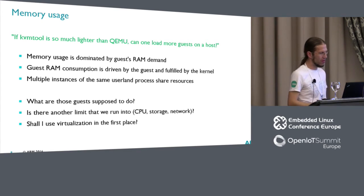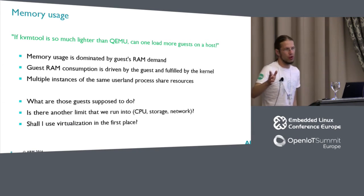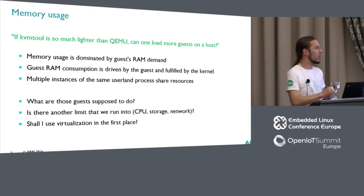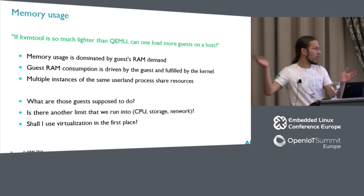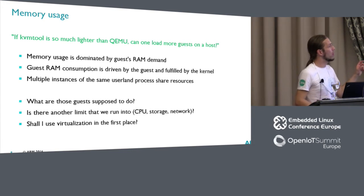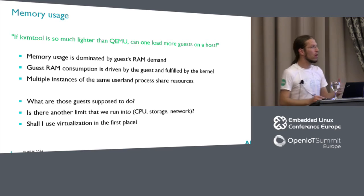First thing to think about: the memory usage in a normal big guest virtualization use case is dominated by the guest's RAM demand. The sweet spot of a guest would be one or two gigabytes of memory. So everything talking in the tens of megabytes doesn't really matter. If you have four guests of four gigabytes, it doesn't matter whether the user-land tool takes 40, 50, 60, or 70 megabytes. Also, you have to think that the guest's RAM consumption — what the guest actually does with the memory — is driven by the guest. The guest allocates and uses memory, and the fulfillment is done by the kernel.